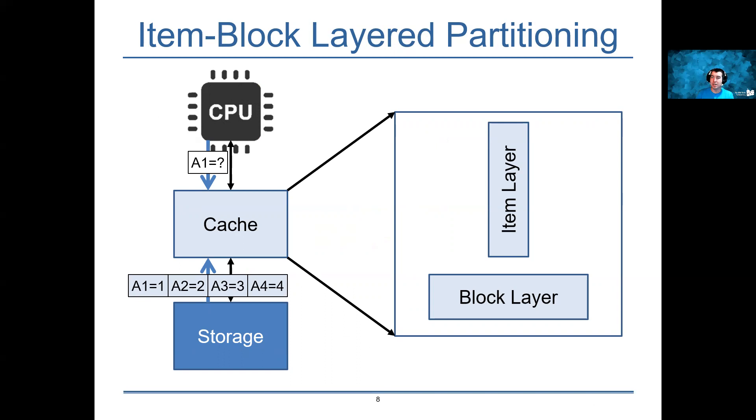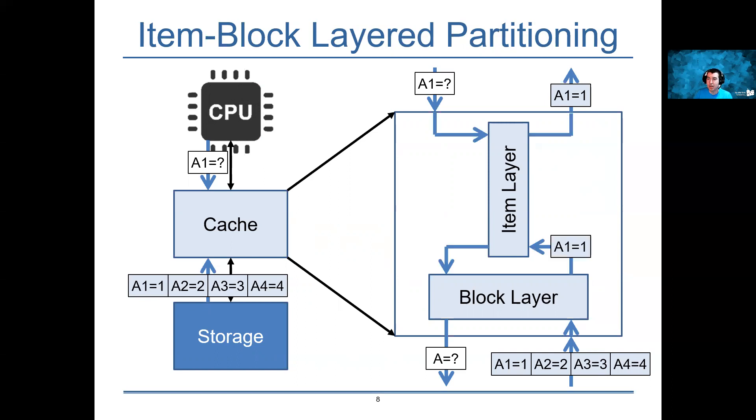There's a little bit of subtlety here because when you receive requests, if they just go to both layers, then both layers are going to suffer the problems that we saw in the lower bound area. But by routing requests such that the item layer receives requests first, and the block layer only sees requests that missed the item layer, we're able to avoid the bad cases for a block policy by having minimum temporal locality already covered by the item layer.